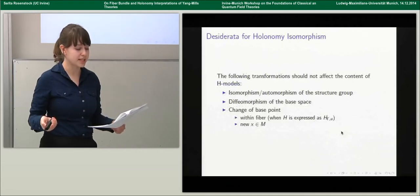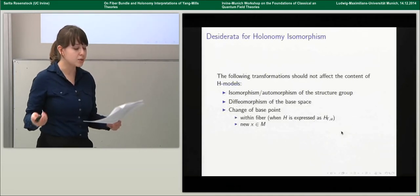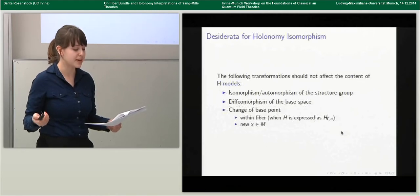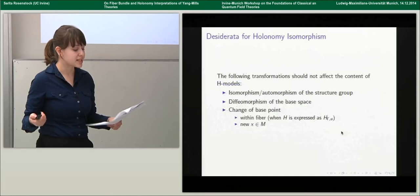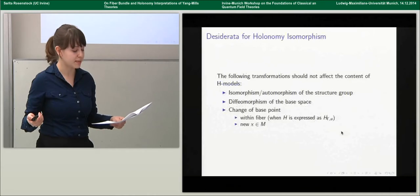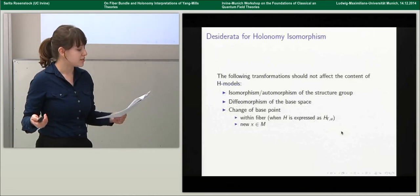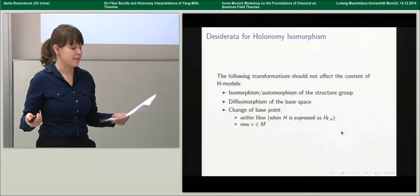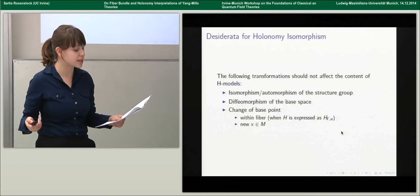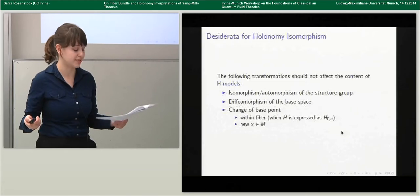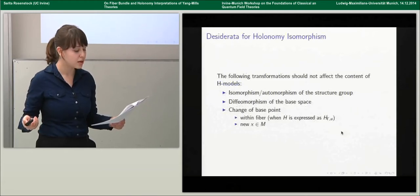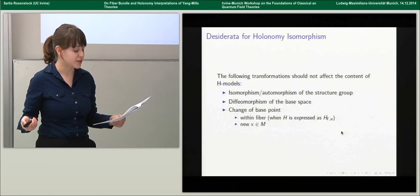We thus want a definition of holonomy isomorphism that identifies all and only holonomy models that differ only by features that should not be physically significant. These include models related by isomorphisms or automorphisms of the structure group acting as the range of the generalized holonomy map, diffeomorphisms of the base space, and a change of base point at which the holonomy map is defined. There are two ways in which a change of base point should not change the significance of a holonomy model.